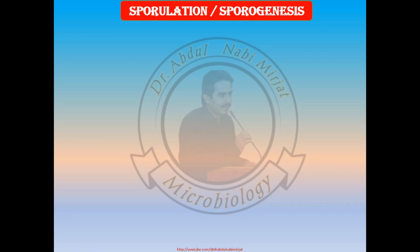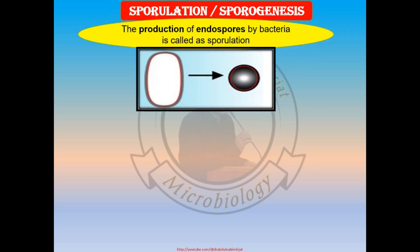What is sporulation or sporogenesis? The production of endospores by bacteria is called sporulation. Simply, the formation of endospores or spores is generally called as sporulation or sporogenesis.